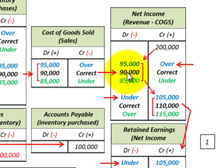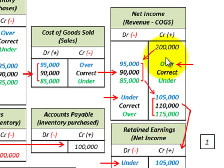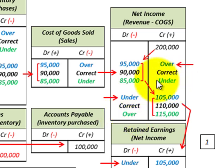The correct cost of goods sold is $90,000. Subtracting that from $200,000 in sales gives the correct net income of $110,000. Where we have undervalued inventory, subtracting the $85,000 cost of goods sold from $200,000 gives net income of $115,000 — overvalued. So overvalued inventory leads to undervalued net income, and undervalued inventory leads to overvalued net income — they work in opposite directions.